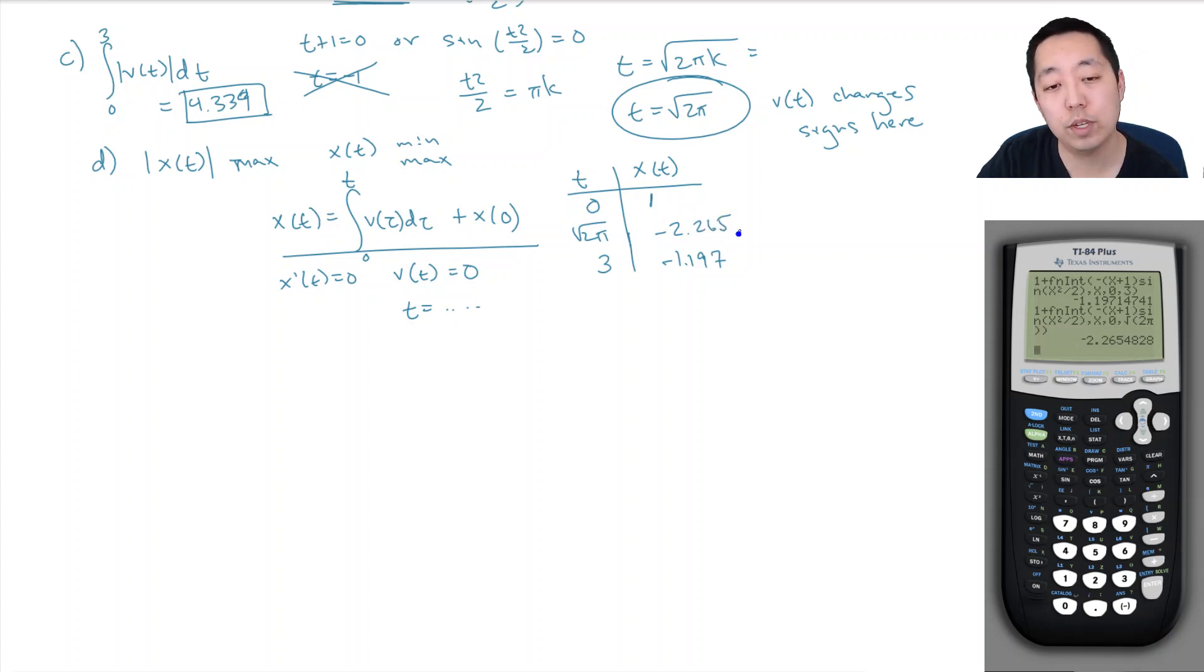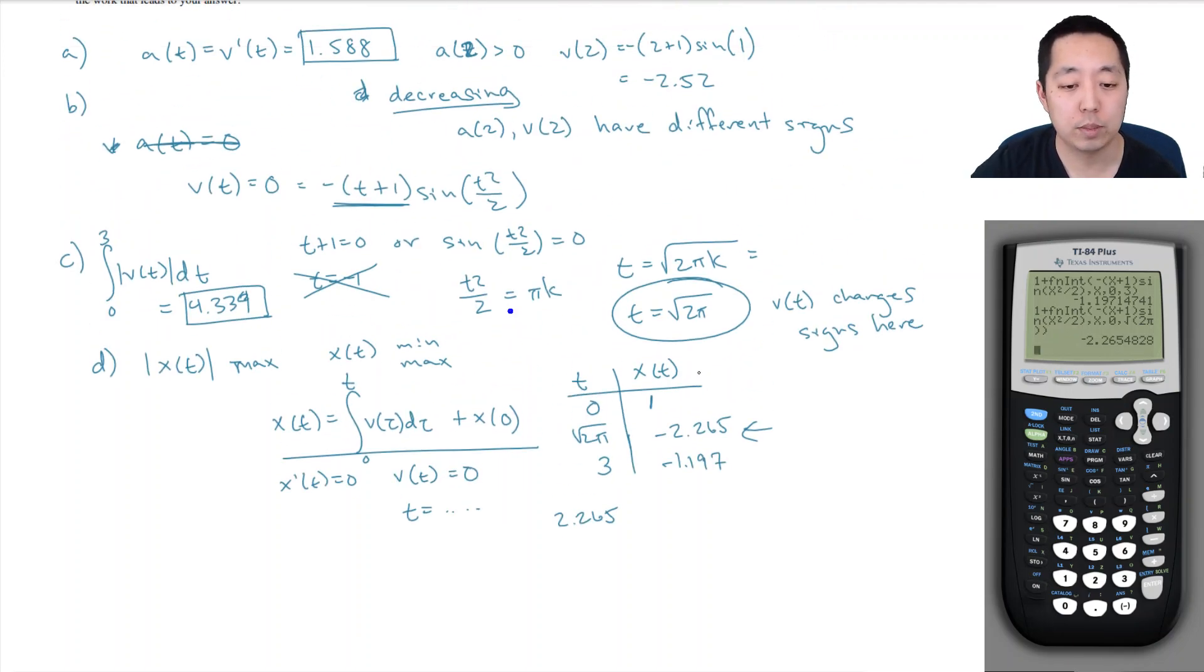So which one of these is furthest from the origin? It's this one, because I just take the absolute value. So it's 2.265, and that's the maximum distance away from the origin.